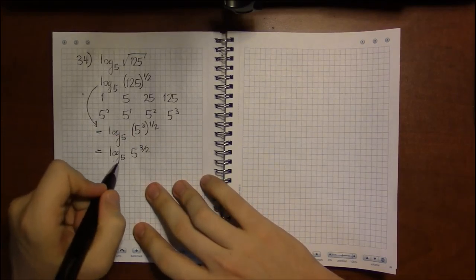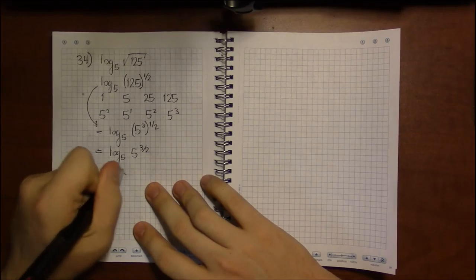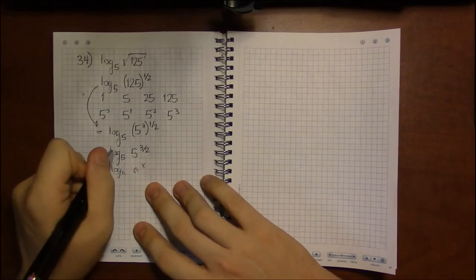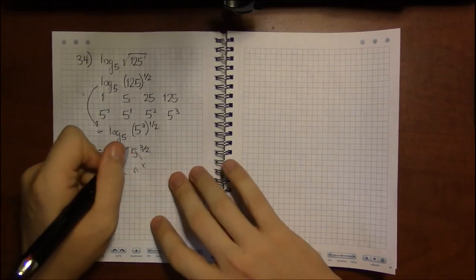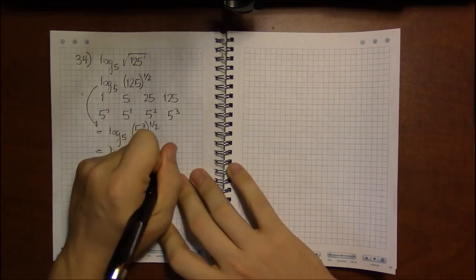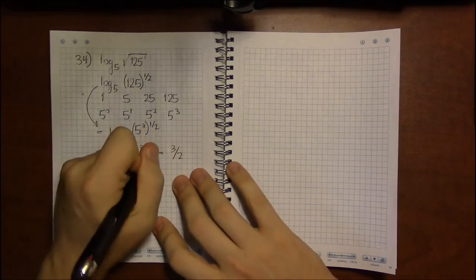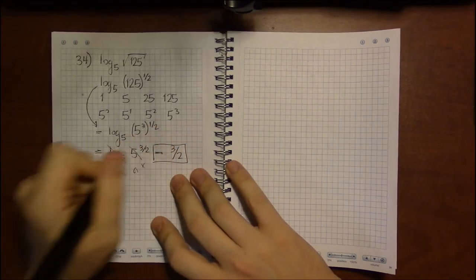And now I've got it in the right form. I've got it in log base a of a to the x, which means the log and the exponential will cancel, leaving me with just the exponent, leaving me with just 3 halves.